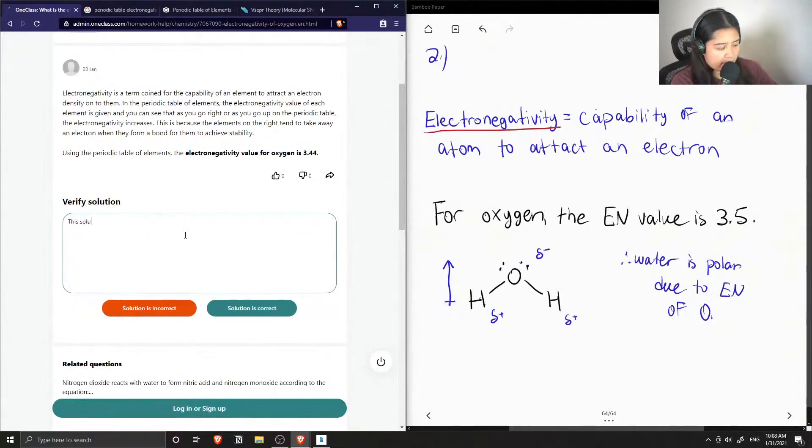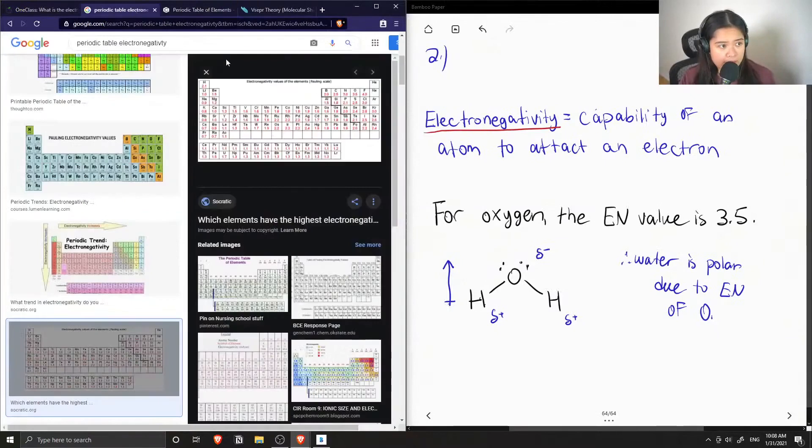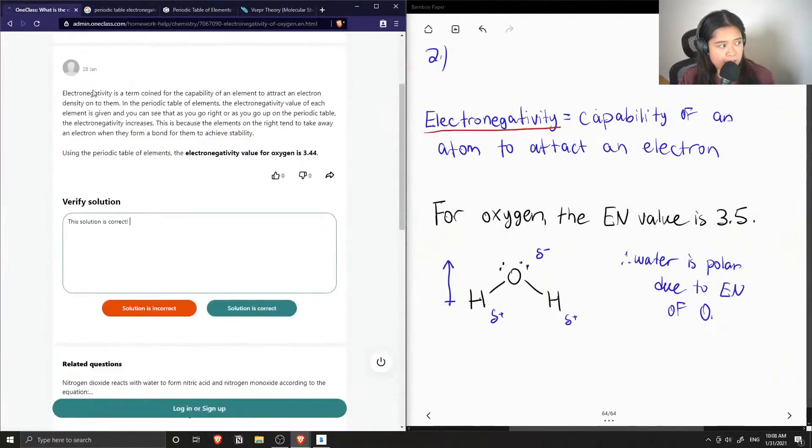Okay, so this solution is correct. Depending on what you use as a reference, you might get slightly different electronegativity values. You can tell that this one here is a little more accurate than the table that I used, which rounds the values. So it just depends on which reference you use, but this solution is still correct.